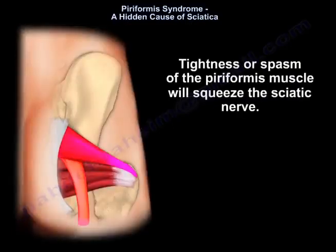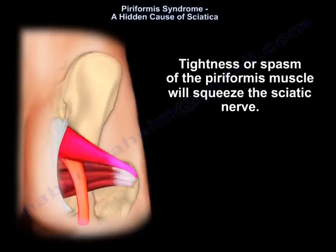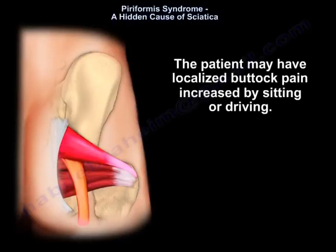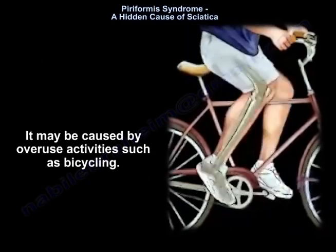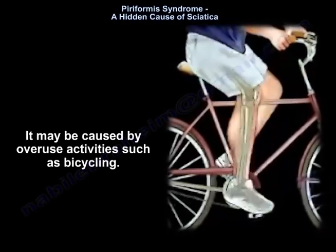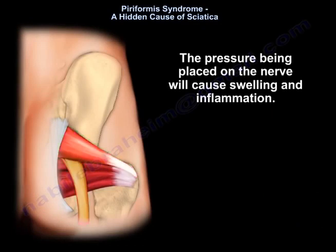Tightness or spasm of the piriformis muscle will squeeze the sciatic nerve. The patient may have localized buttock pain increased by sitting or driving. It may be caused by overuse activities such as bicycling. The pressure being placed on the nerve will cause swelling and inflammation.